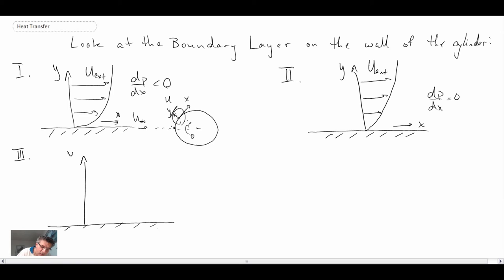And so looking again at what's going along the wall, or what's happening, Y would be normal. Our velocity profile may start to look something like this. And this would be DP by DX greater than zero. But this is what we would call a critical adverse pressure gradient.